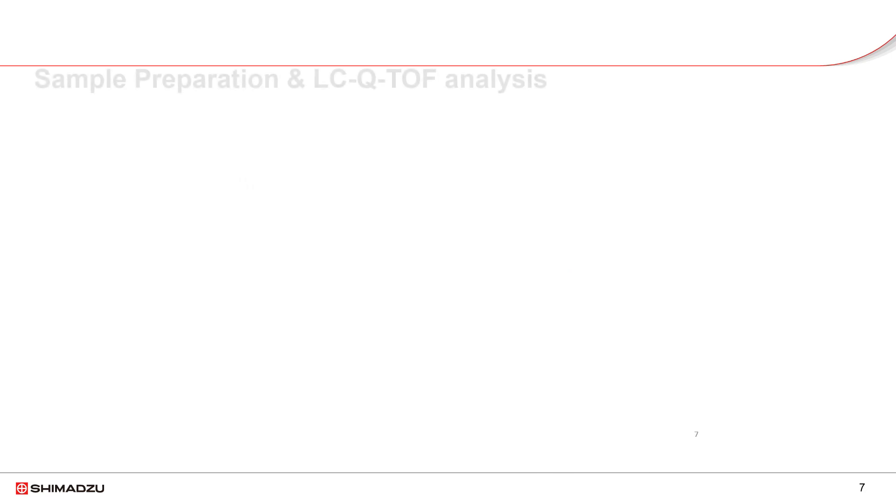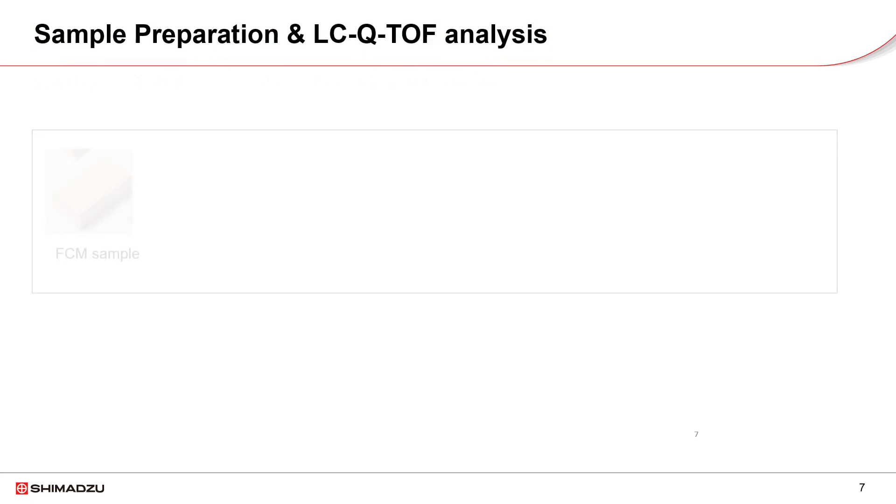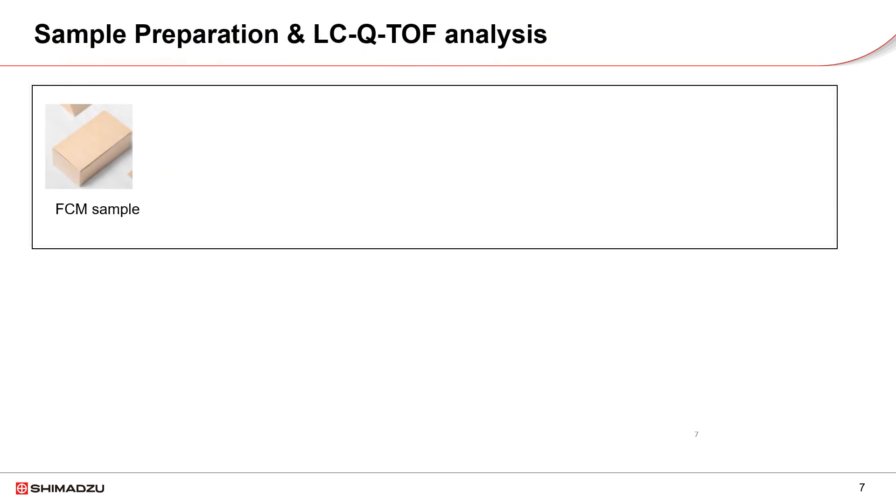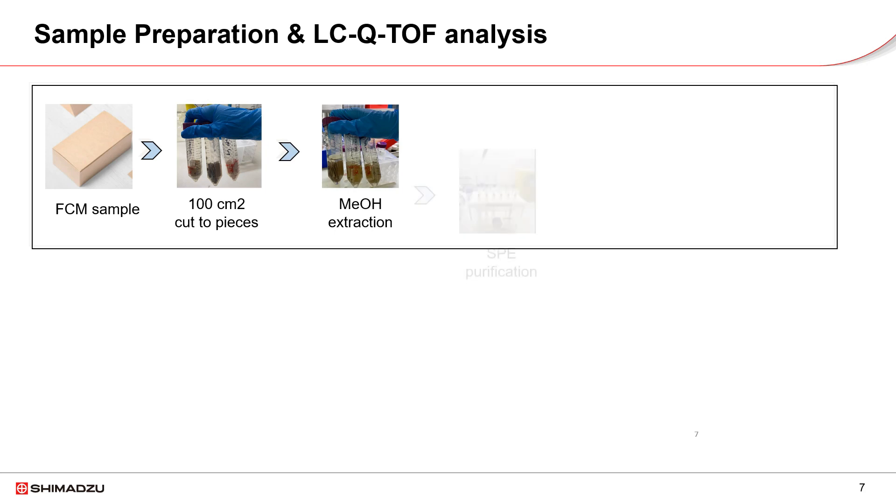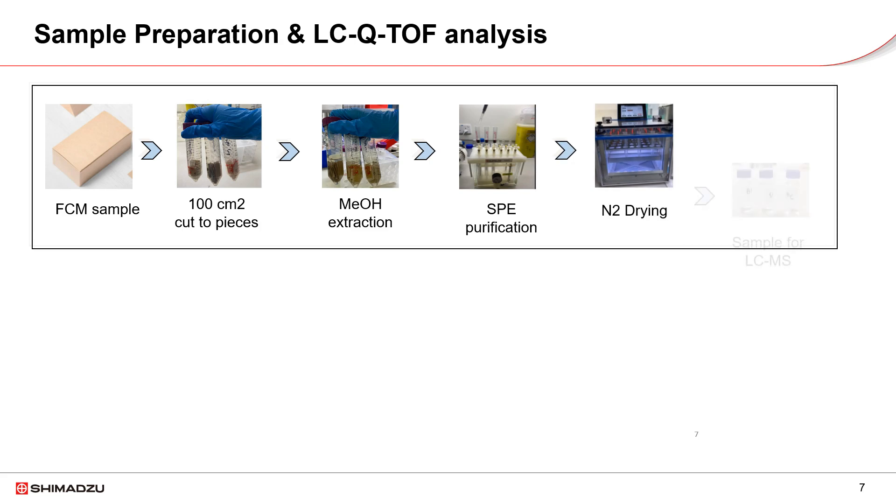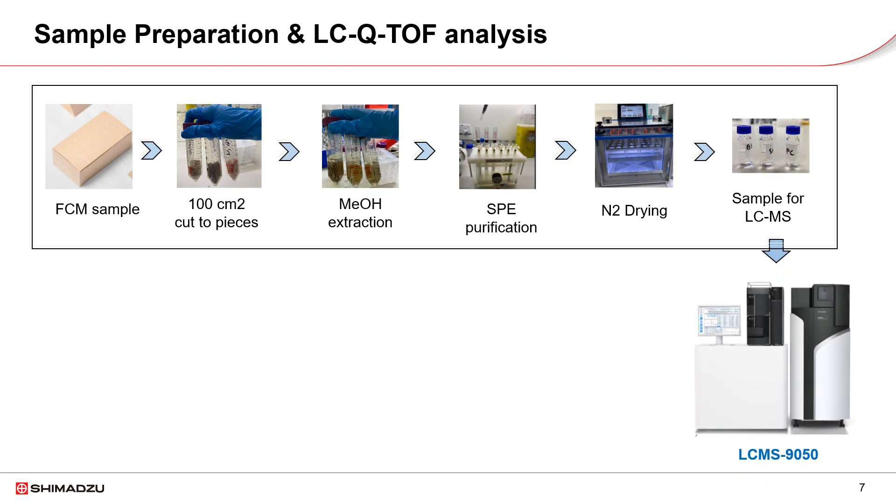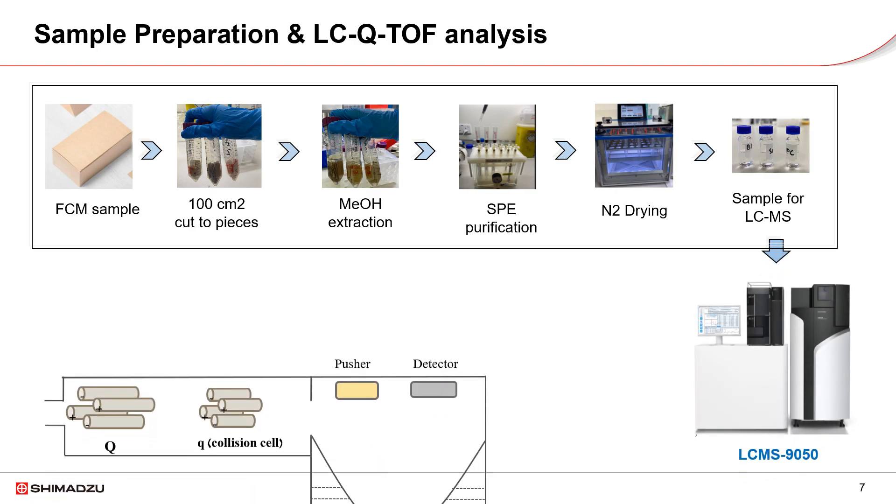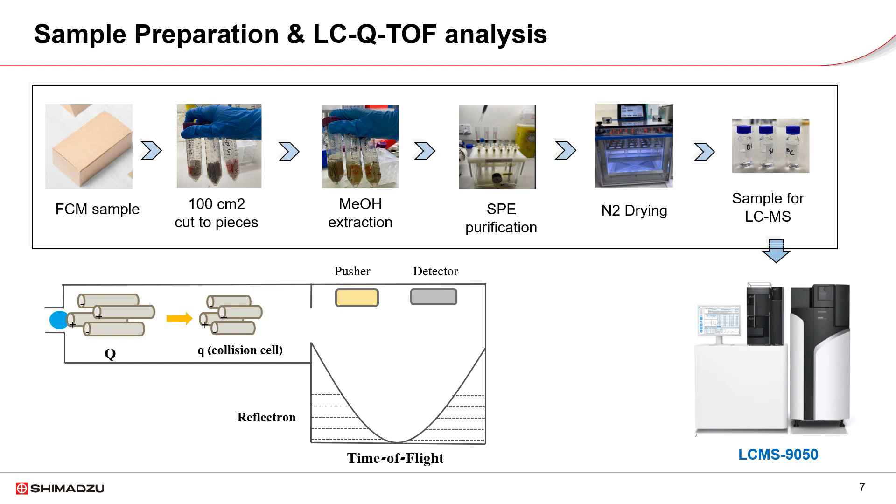Sample preparation for PFAS includes mainly methanol extraction and purification steps. Paperboard sample is cut into small pieces and extracted with methanol at room temperature sonicating for 30 minutes. Then, the sample is purified with solid phase extraction to remove color substances, drying and reconstitute with diluent. The final aqueous-based sample is injected to LC-MS for analysis.